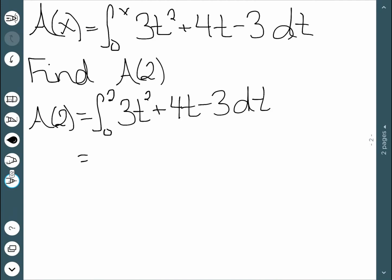Whenever we integrate, we add 1 to the exponent and divide. So our first term would be t cubed. Adding 1 to the exponent and dividing would give us 2t squared. And the integral of a constant is that constant times t, so 3t.